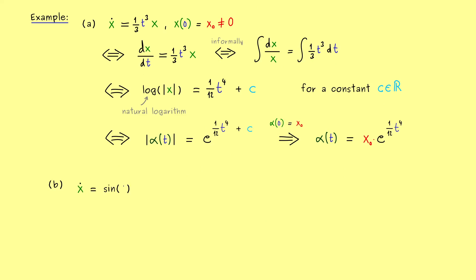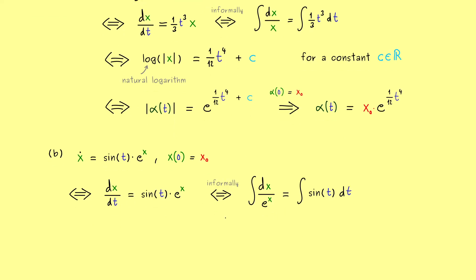Let's take x dot is equal to sin of t times e to the power x. In fact, it's more complicated than before, but we also recognize that the two variables are separated. In other words, we should be able to do our informal step here again. So we have dx divided by e to the power x is equal to sin of t dt. Then you already know we write the integration symbols and go to the antiderivatives.